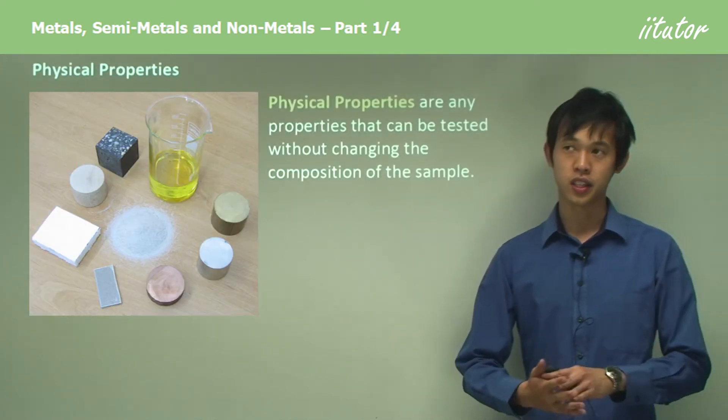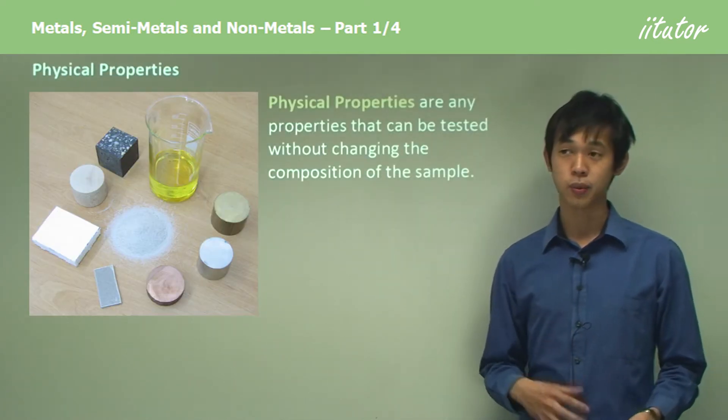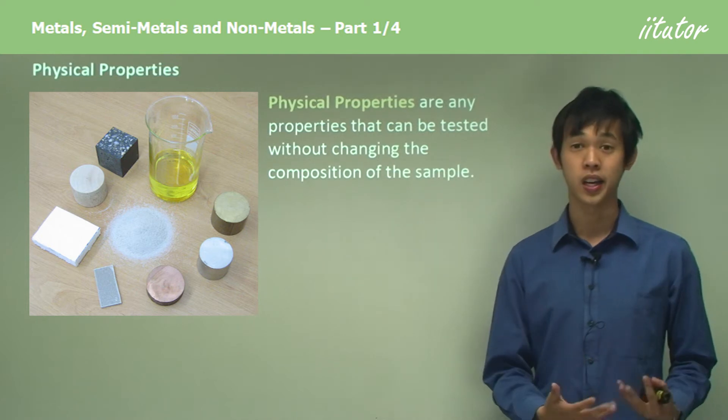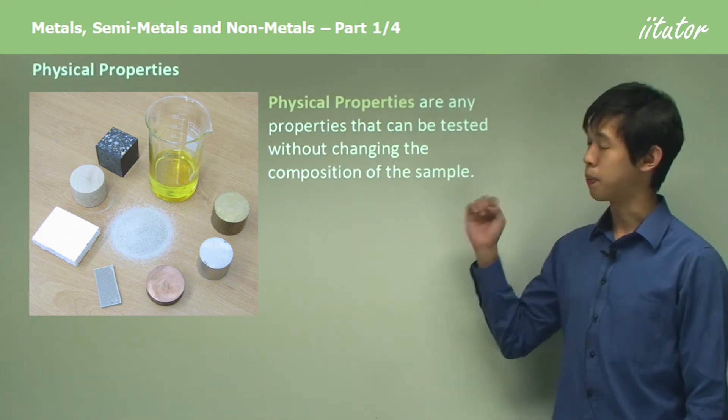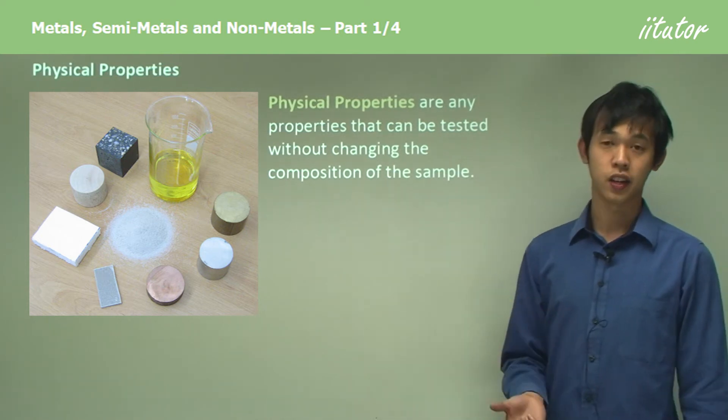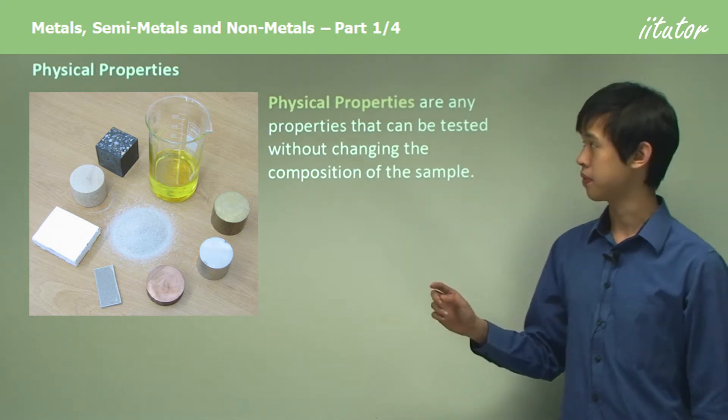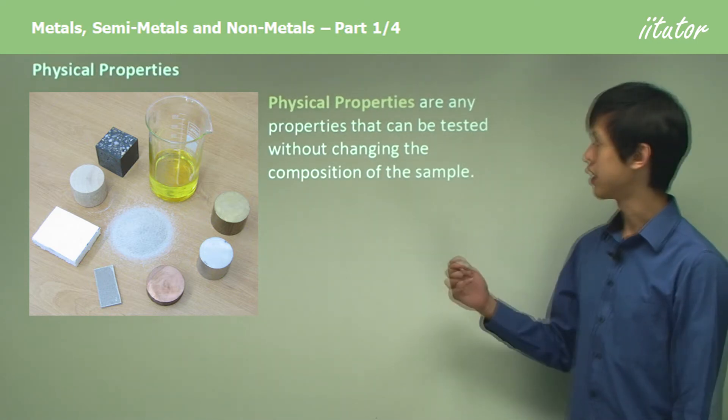First, before we talk about categorizing things, we need to make sure we understand how we categorize things. We categorize different elements based on their physical properties. A physical property is anything that can be tested without actually changing the composition of the sample.